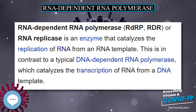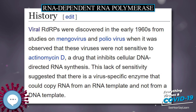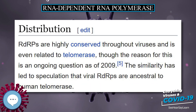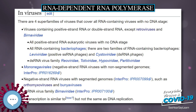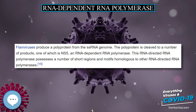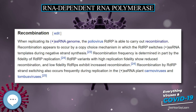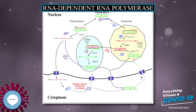RNA-Dependent RNA Polymerase (RDRP), also called RDR or RNA replicase, is an enzyme that catalyzes the replication of RNA from an RNA template. This is in contrast to a typical DNA-dependent RNA polymerase, which catalyzes the transcription of RNA from a DNA template. RDRP is an essential protein encoded in the genomes of all RNA-containing viruses with no DNA stage. It catalyzes synthesis of the RNA strand complementary to a given RNA template.